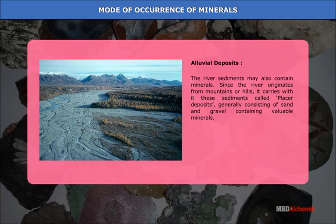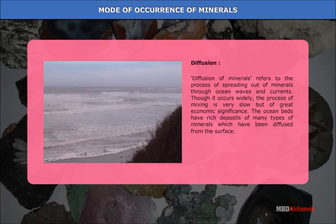Alluvial deposits. River sediments may also contain minerals. Since the river originates from mountains or hills, it carries these sediments called placer deposits, generally consisting of sand and gravel containing valuable minerals. Diffusion of minerals refers to the process of spreading out of minerals through ocean waves and currents. Though it occurs widely, the process of mixing is very slow but of great economic significance.